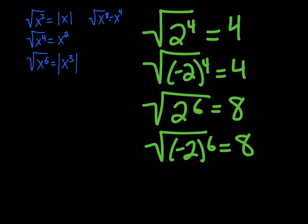We only write the absolute value bars if we're dealing with a variable, not a number. For example, we would write positive 8 instead of the absolute value of negative 8, if that were the case.